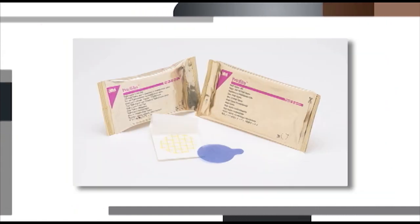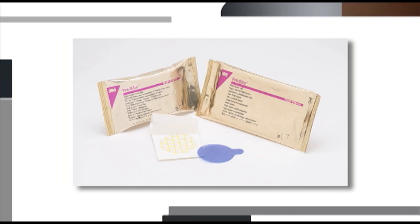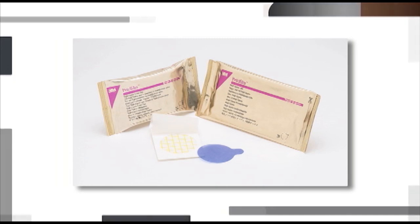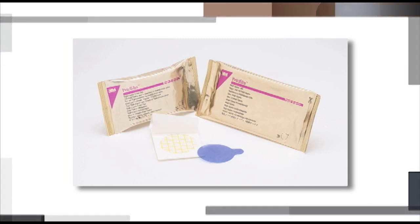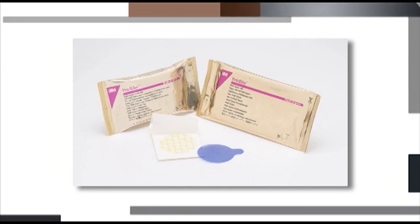The 3M PetriFilm Staff Express Count Plate and Disc consists of two parts: the plate itself, which contains chromogenic, modified Baird-Parker nutrients and a gelling agent, and the Staff Express Disc to facilitate differentiation of Staph aureus from other suspect colonies when background microflora are present.